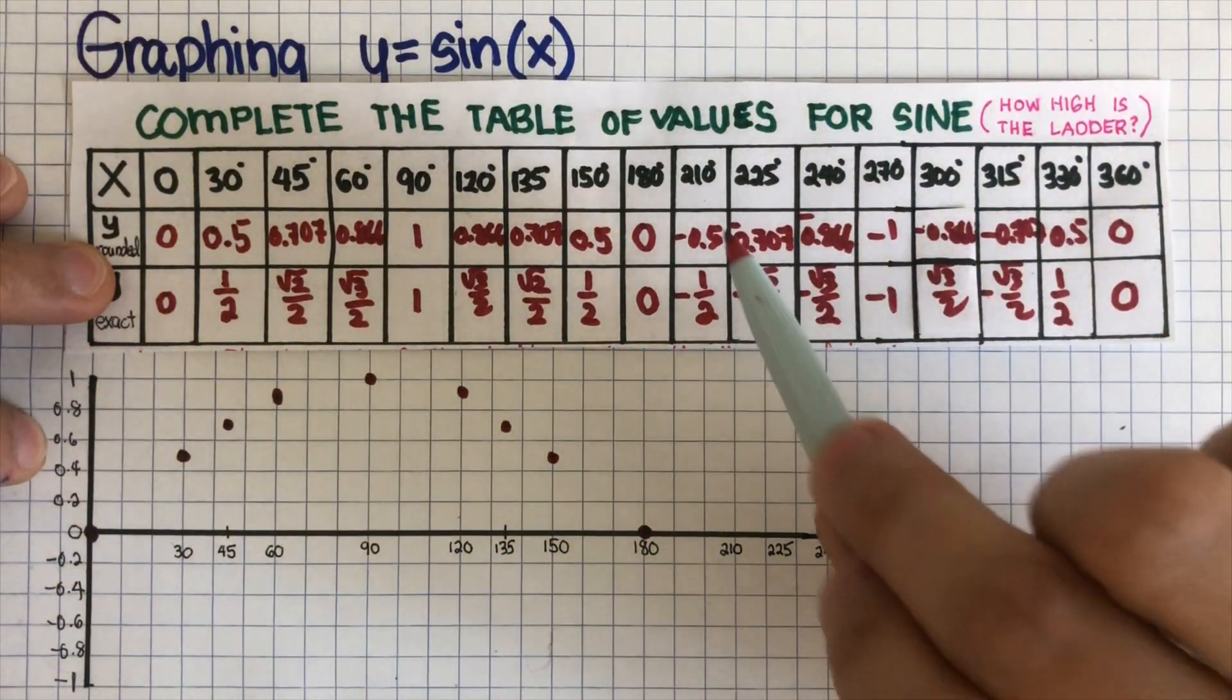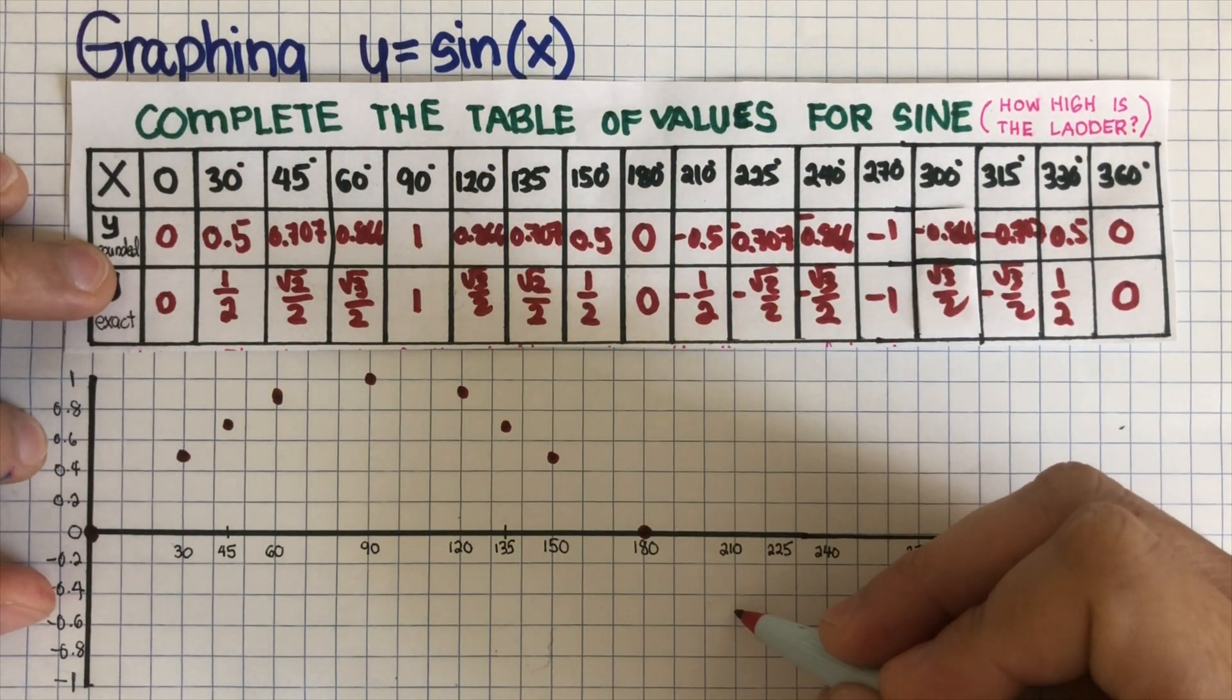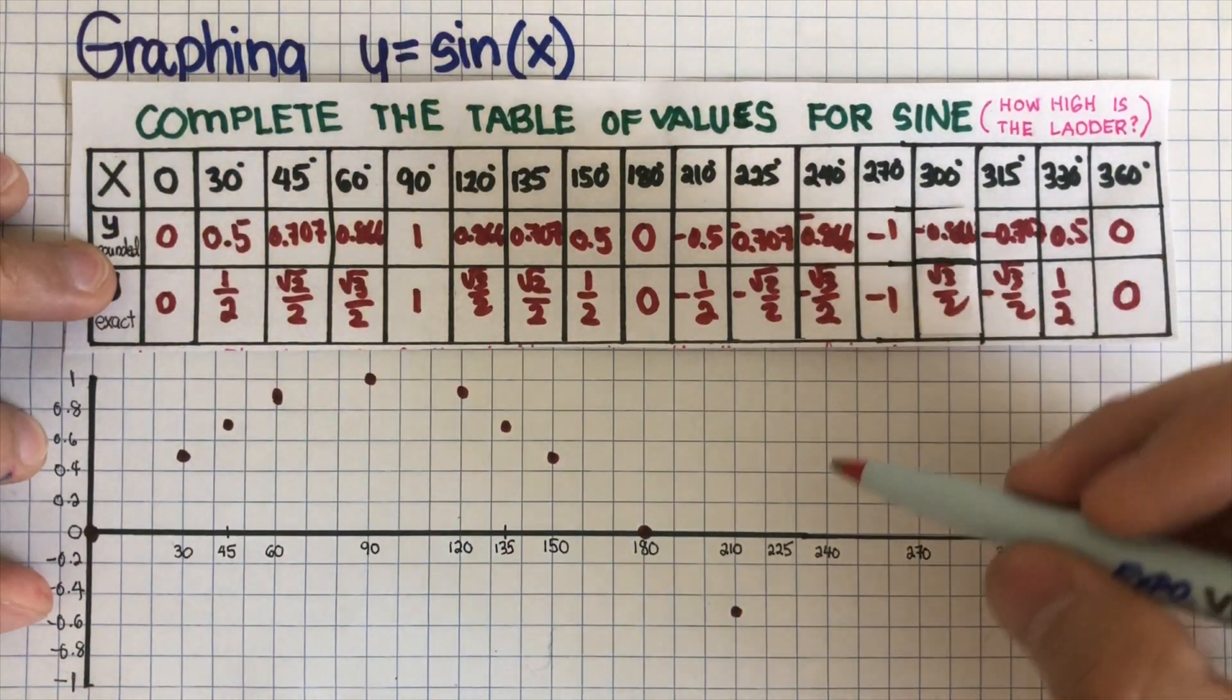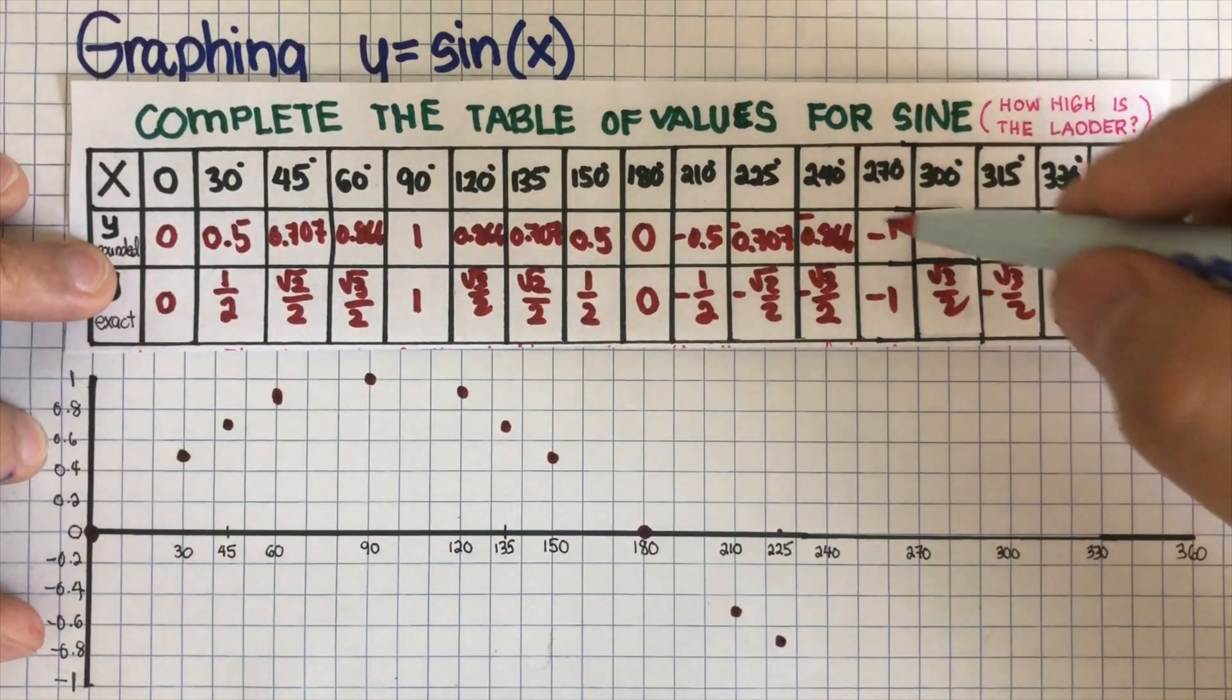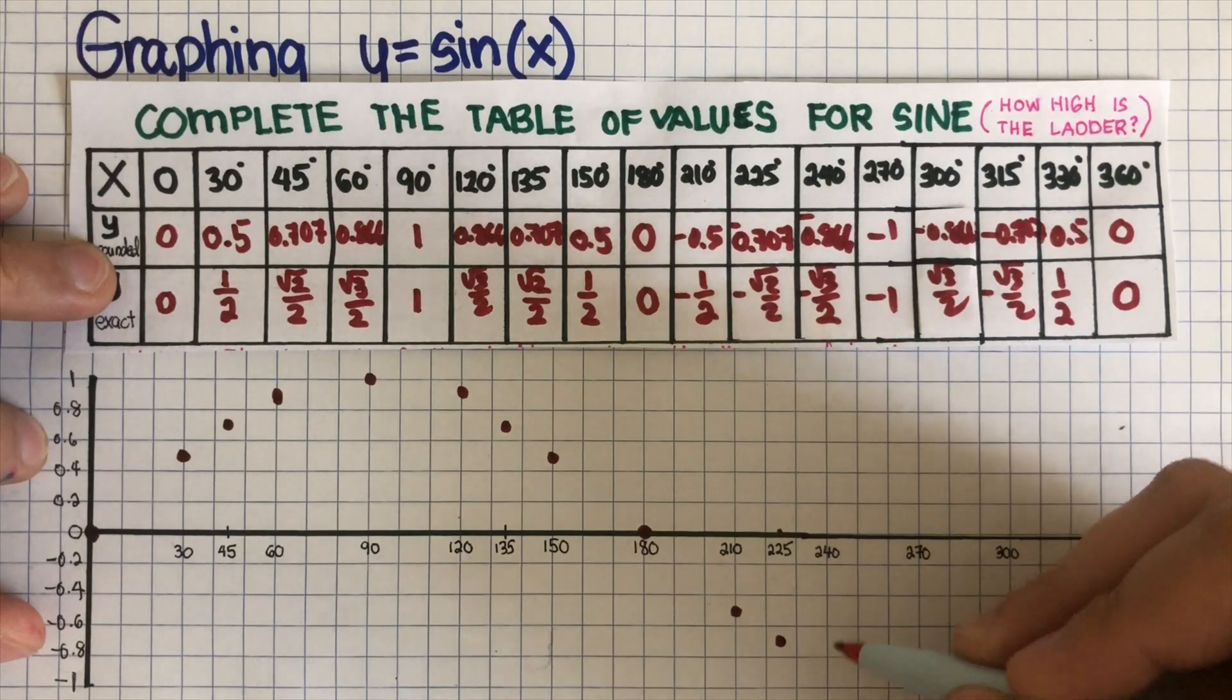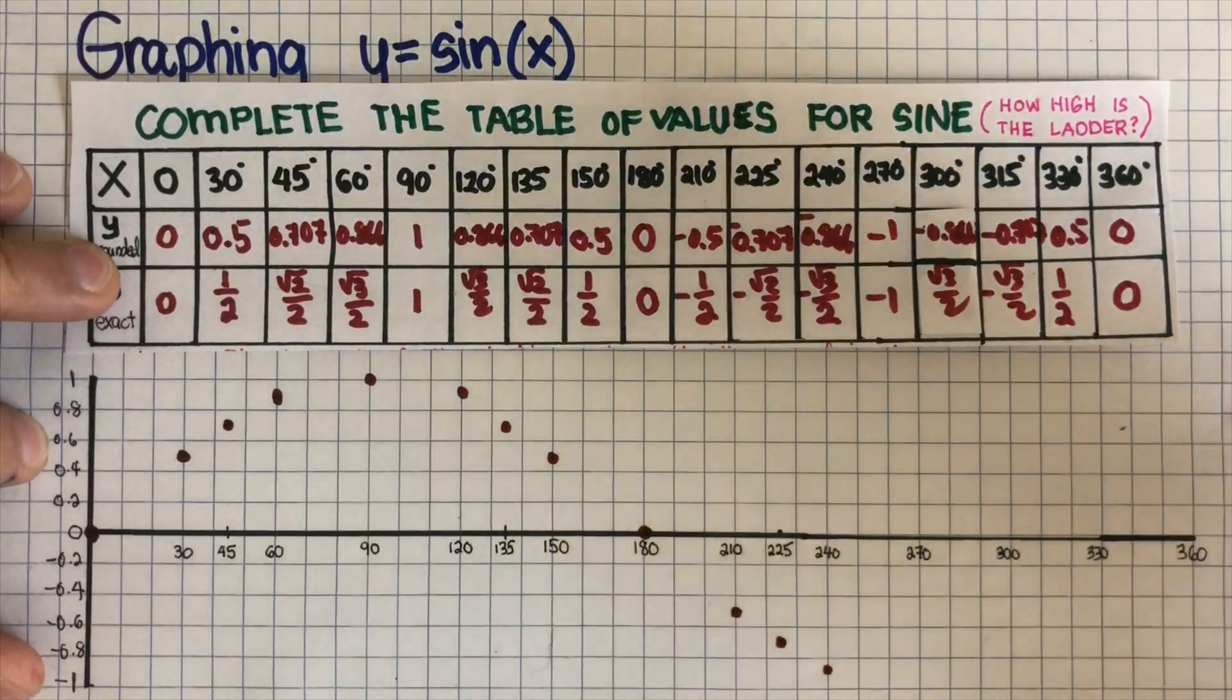And then 210 is 0.5, which is negative. It's going to be down below for 210. And then 225 is negative 0.866, it's going to be around here. And then 270 is negative 1, so it's going to go down here.